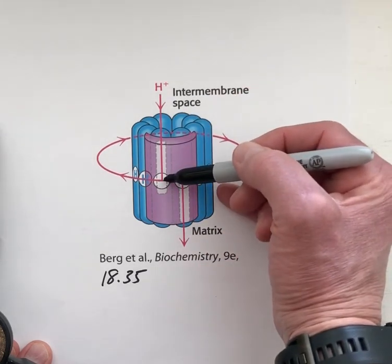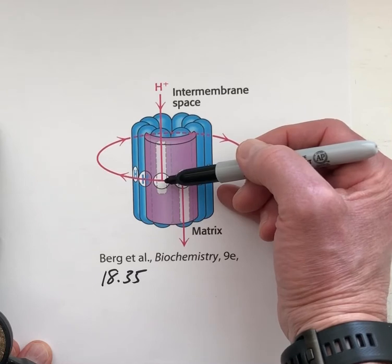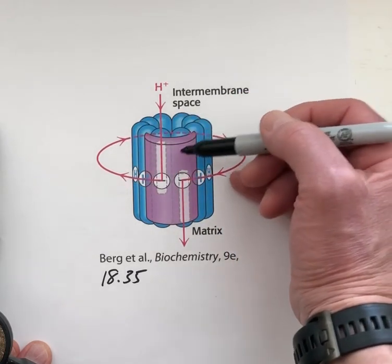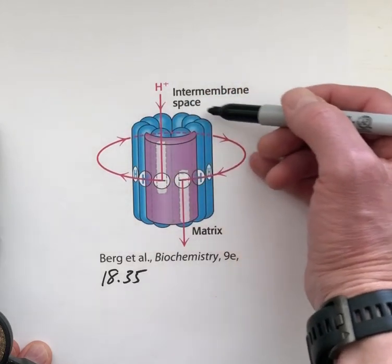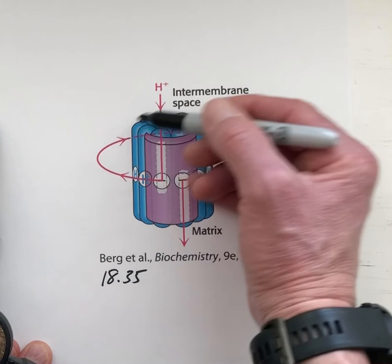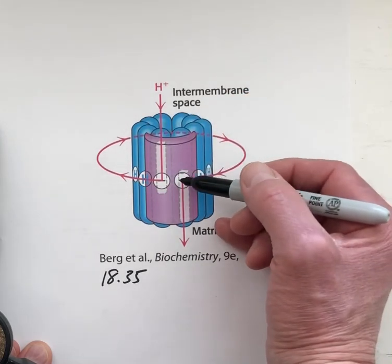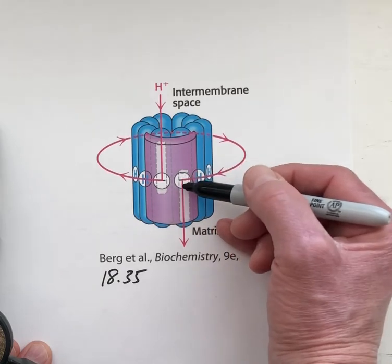Protons come into this half channel in the A subunit. They attach themselves to the glutamate residue, and then that glutamate residue has to rotate all the way around before it gets to this other half channel.